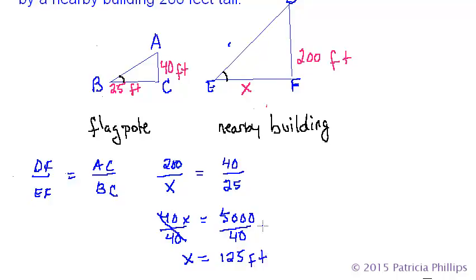So when you look up here at the diagrams that I drew and you see the triangle on the right, which represented the 200 foot building, the shadow cast, which is where the line EF is, the shadow cast is going to be 125 feet.